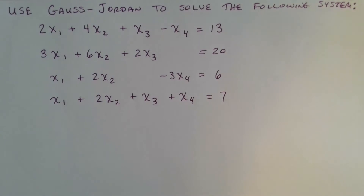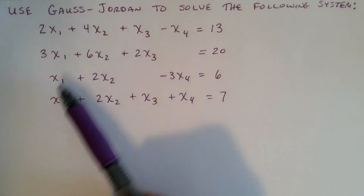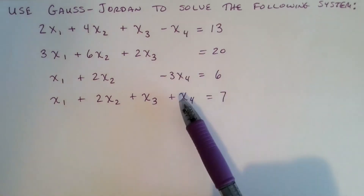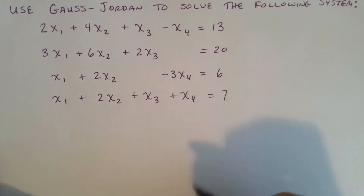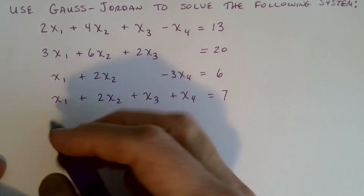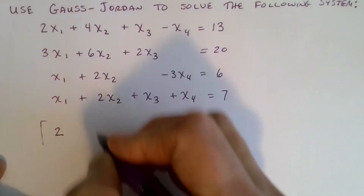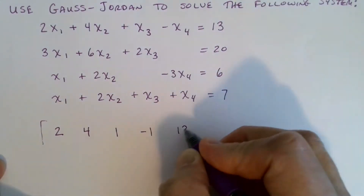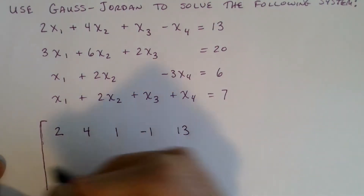The first thing is we've got our system of linear equations. The important thing is to make sure all your variables are lined up — all the x sub 1's, all the x sub 2's, all the x sub 3's, and so on, equal to your constants. From that, we get the augmented matrix by getting rid of the variables and the equal signs. The first row will have 2, 4, 1, negative 1, equals 13 — the coefficients and the constant.